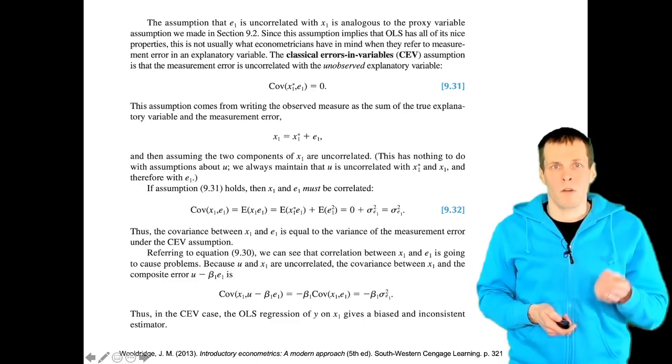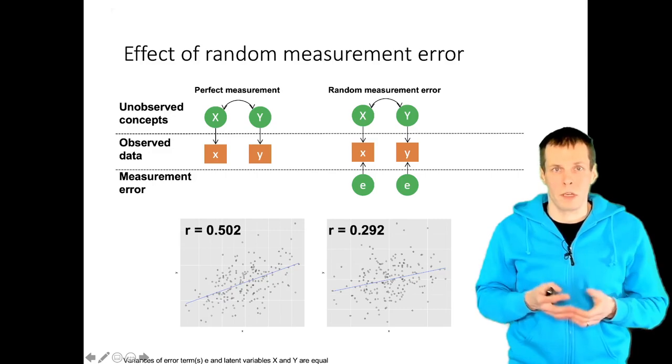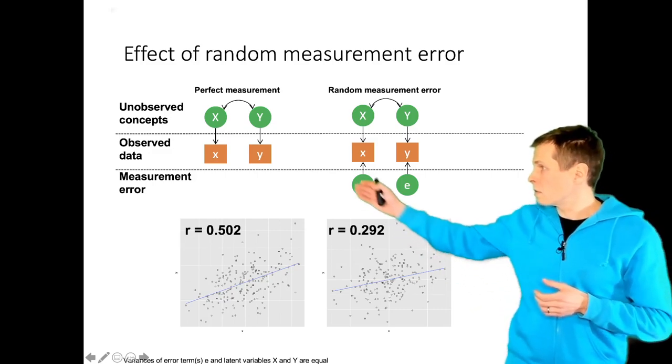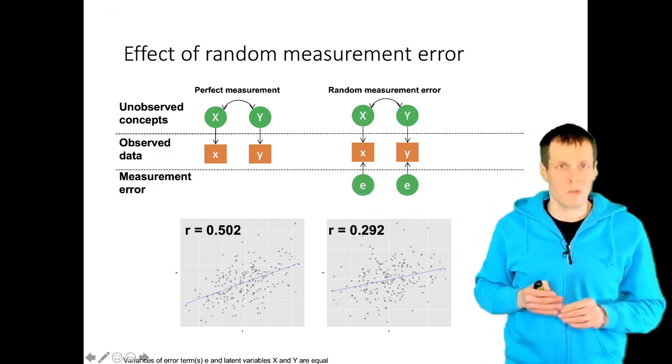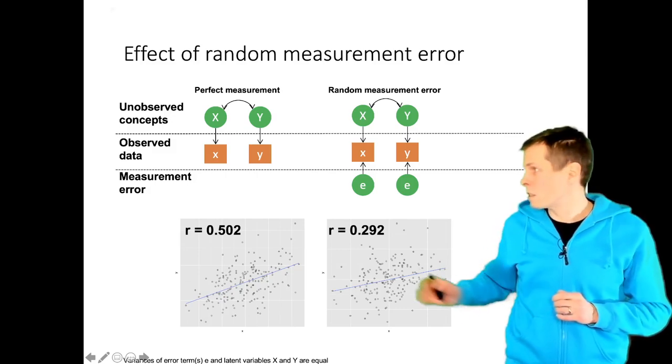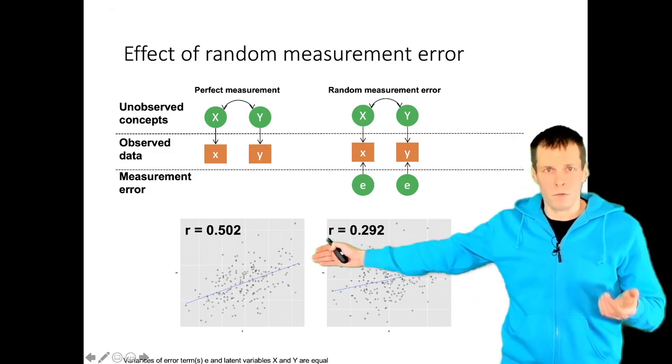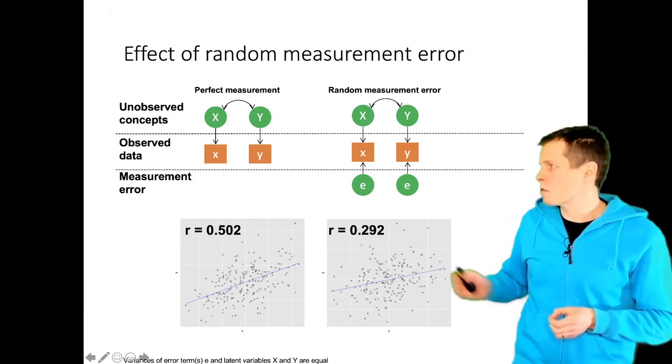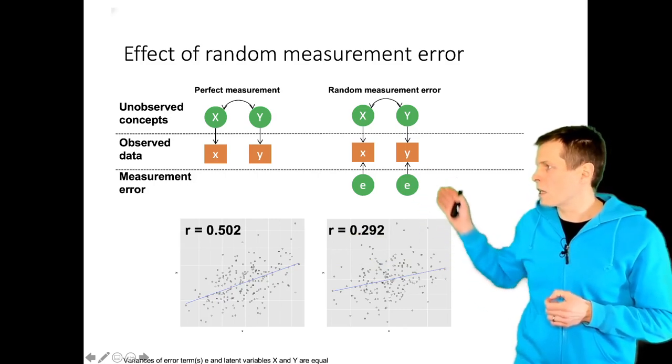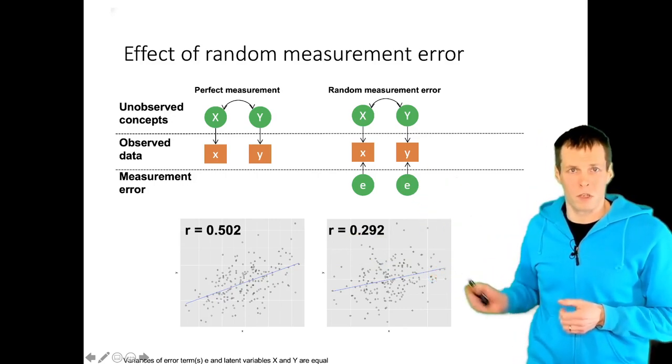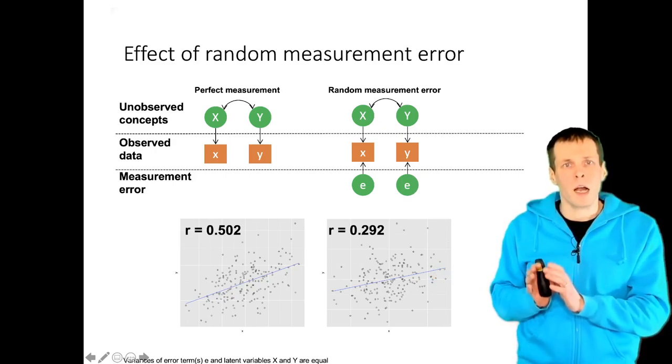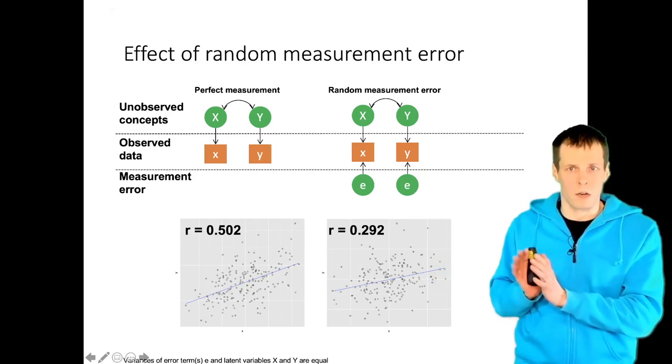The measurement error in indicators causes attenuation. So if we have X and Y that are perfectly measured with no noise in the measurement, the correlation might be 0.5. And if we have measurement error, so there's random noise in X and Y, then the correlation is attenuated. Errors in variables regression deals with this kind of scenario.